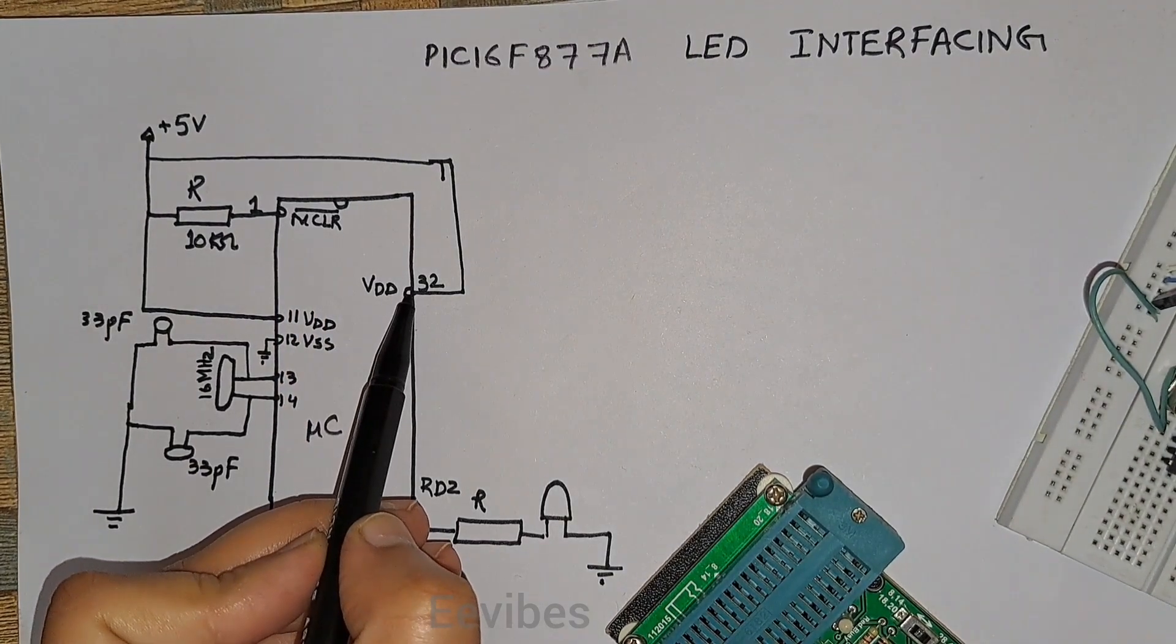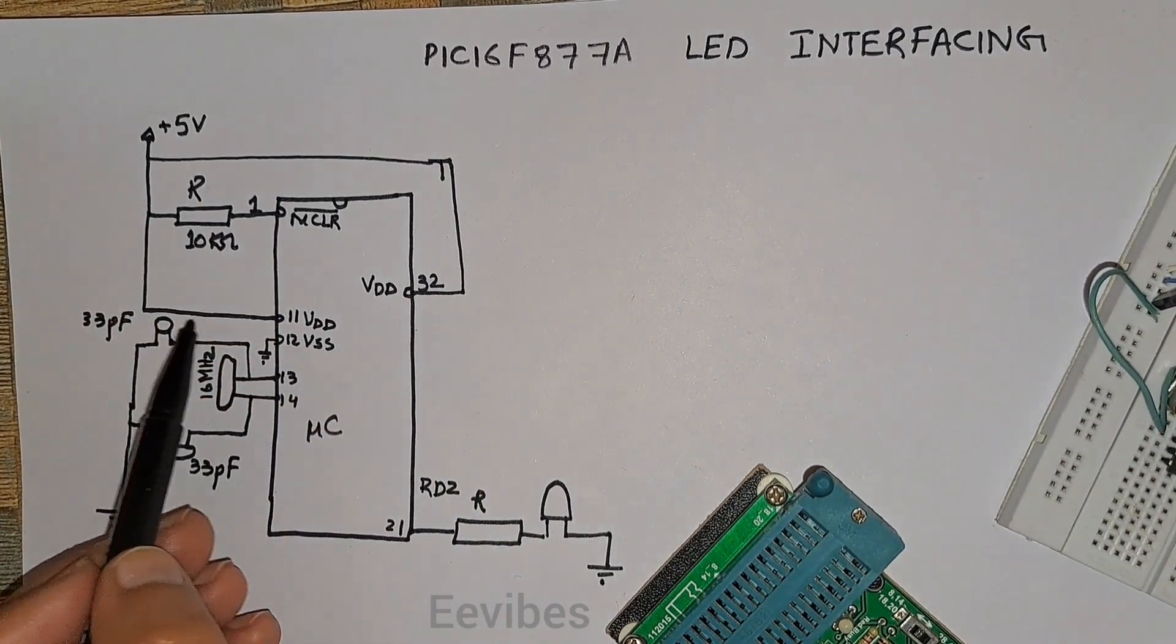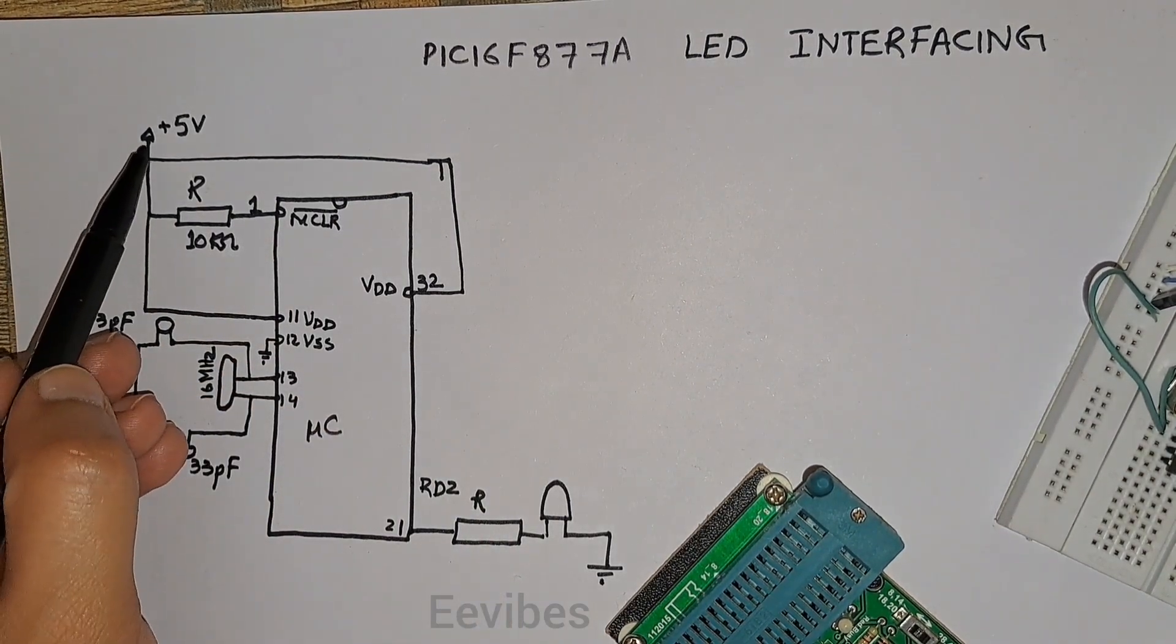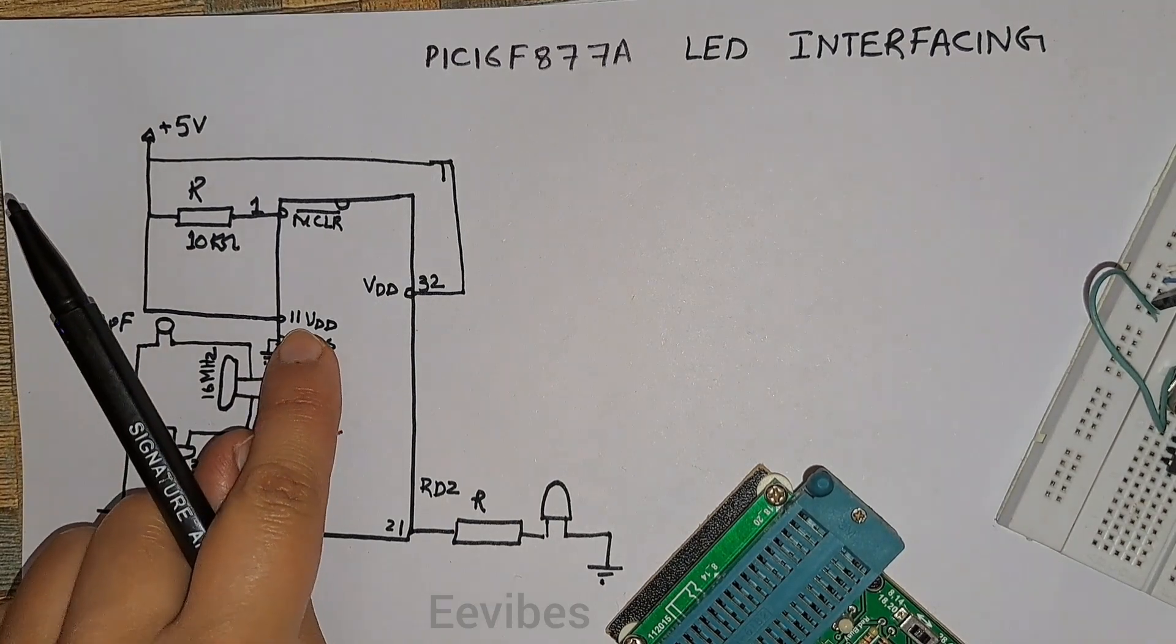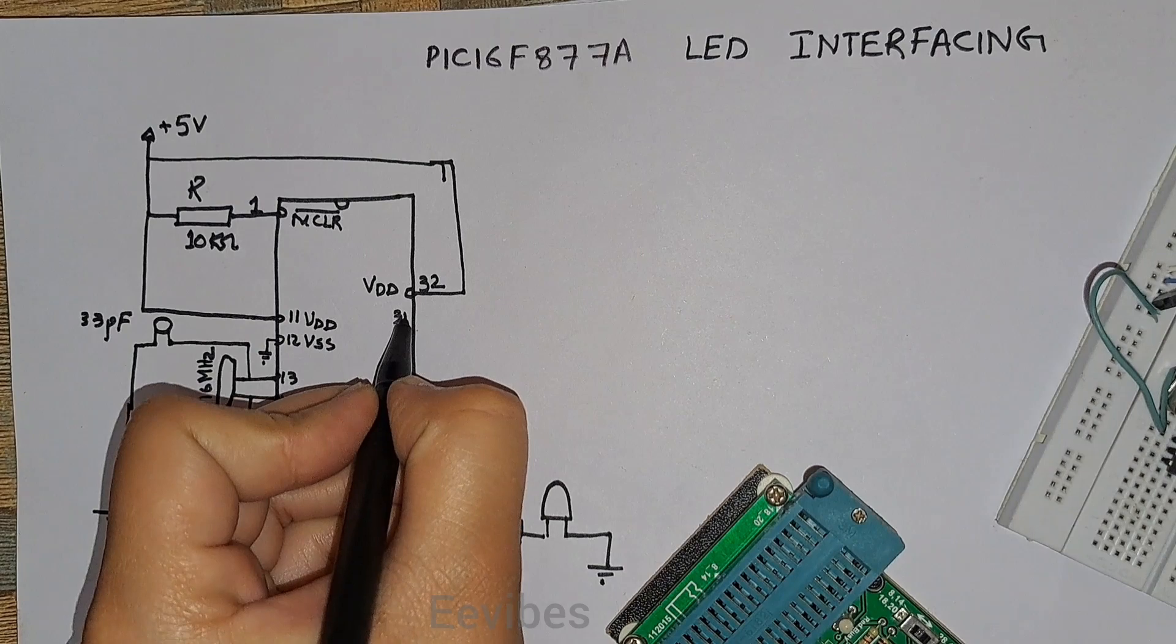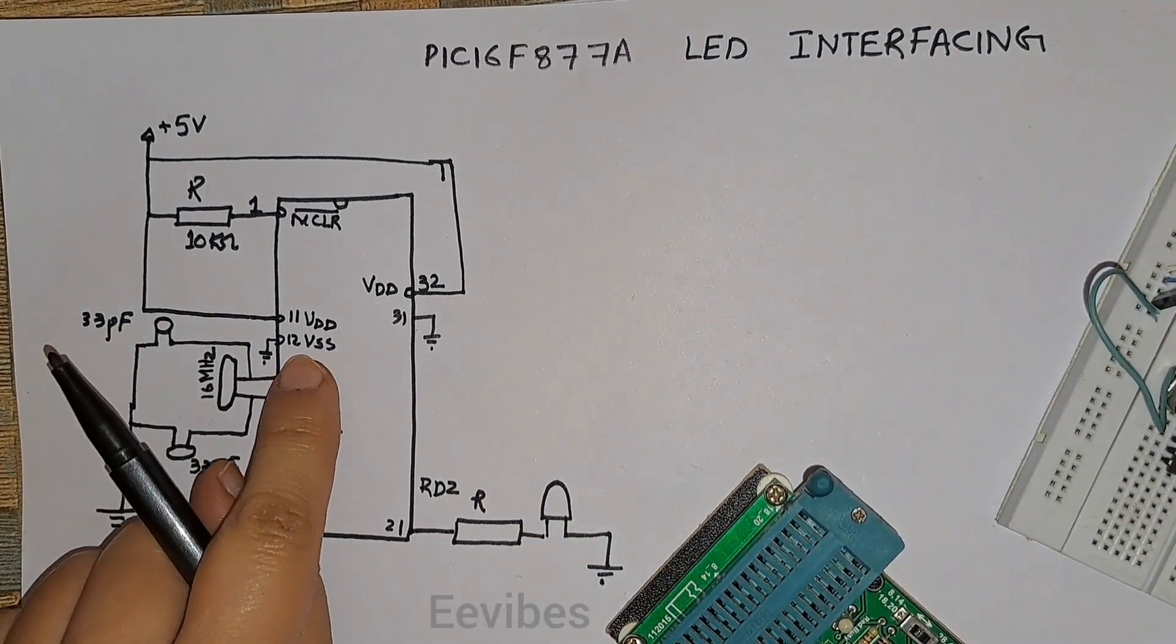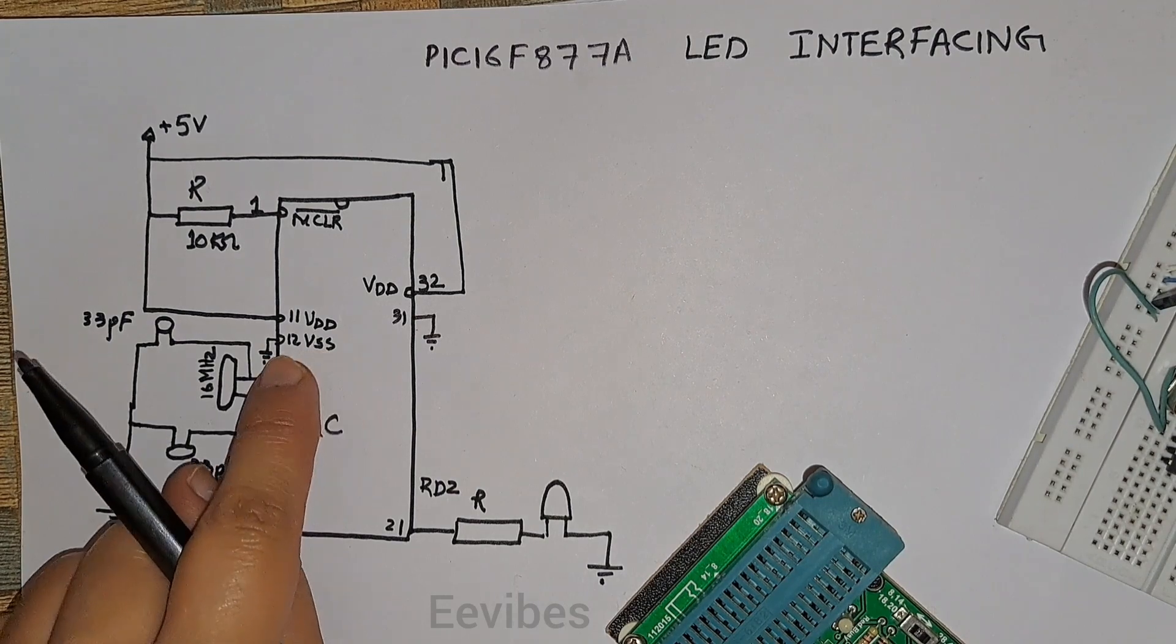You can see the 32 pin is actually the VDD pin which is connected with 5 volts. Similarly, pin 11 is also used for VDD connection and here I have supplied 5 volts. Then another pin which is pin 31 should be grounded, as well as pin 12 which is the VSS.